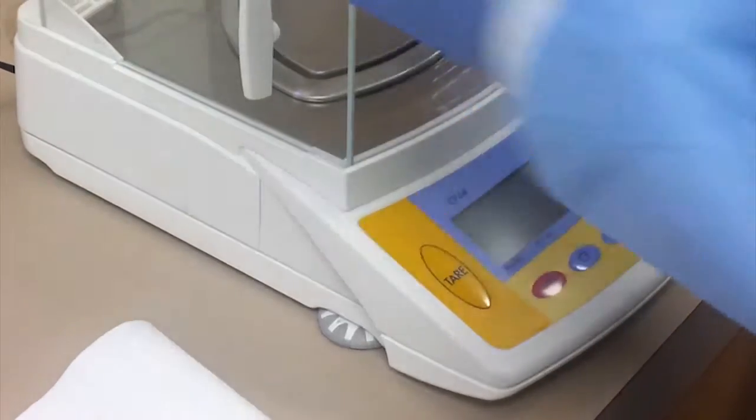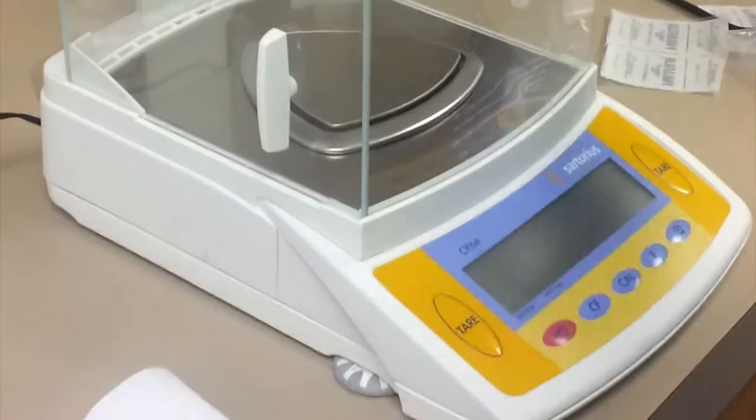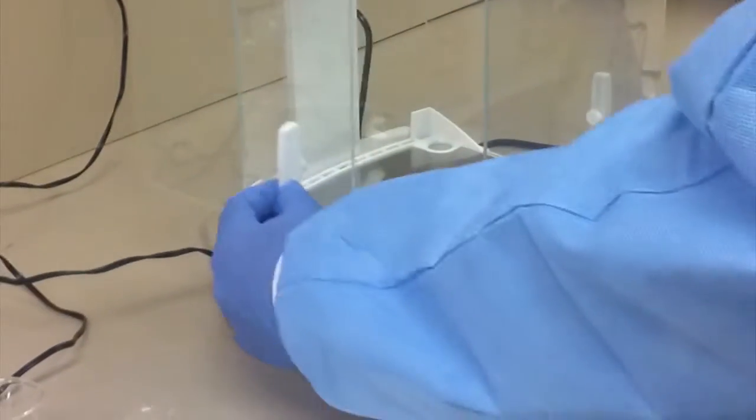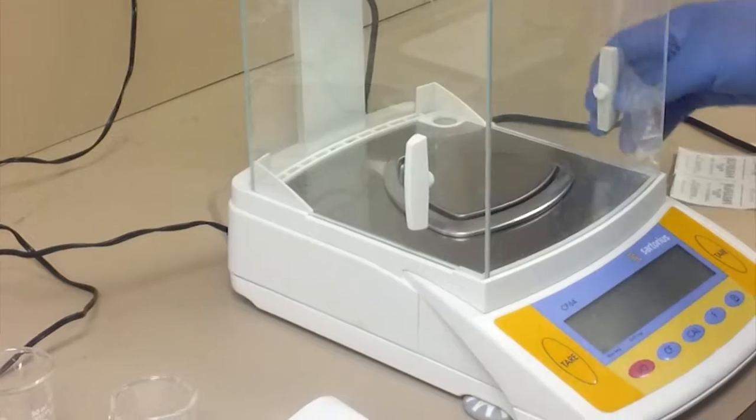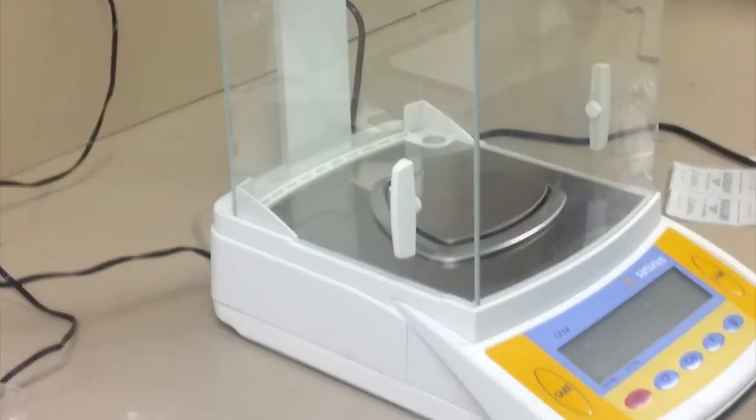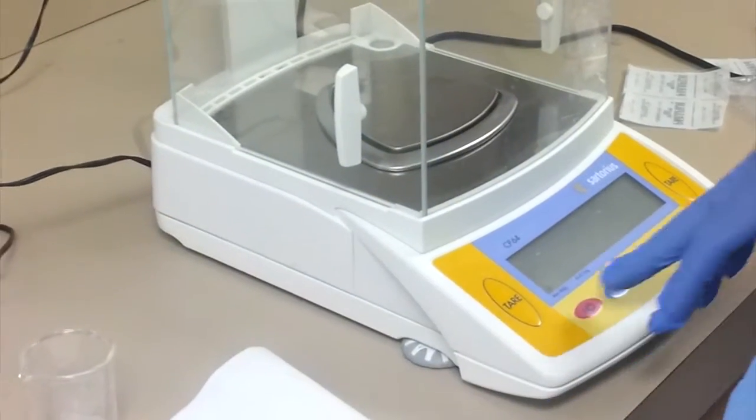As you can see, there's a cage up front, and it is utilized to block any interferences like wind or other vibrations. You can open it from either side or even from the top, and this allows you to hold your substance that you're weighing safely.